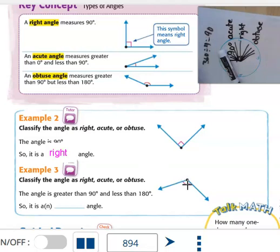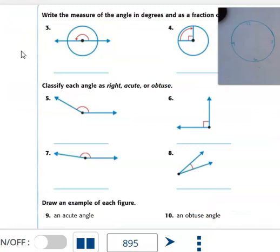This one I can see is greater than 90 degrees, greater than 90 and less than 180. So being greater than 90 makes it an obtuse angle.